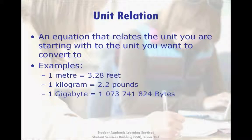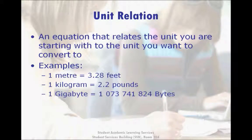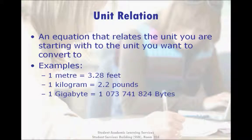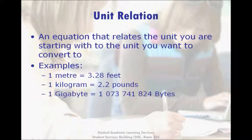Unit relations are usually easy to find. You may have a table of units given for your course, perhaps at the front of your textbook, or you can look them up online — Google is a great resource. Most unit relations are written as one of some unit equal to so many of another unit. For example, 1 meter equals 3.28 feet is all you need to convert between meters and feet. Similarly, once you know that 1 kilogram equals 2.2 pounds, you can convert mass between kilograms and pounds in either direction.